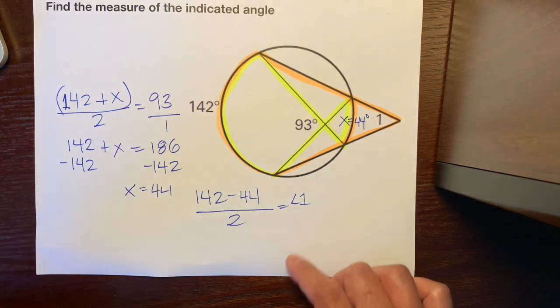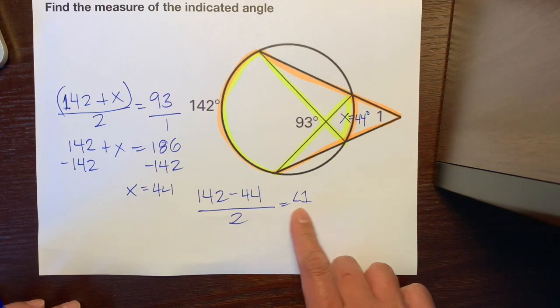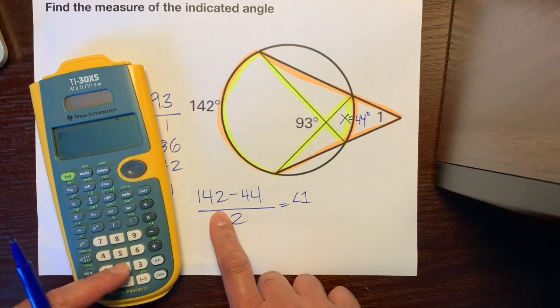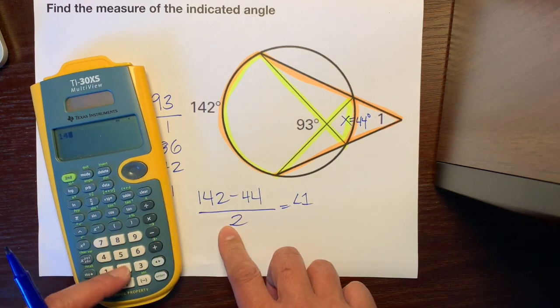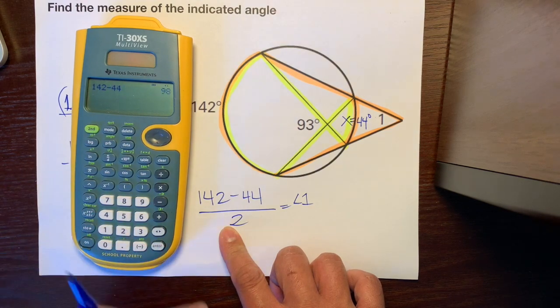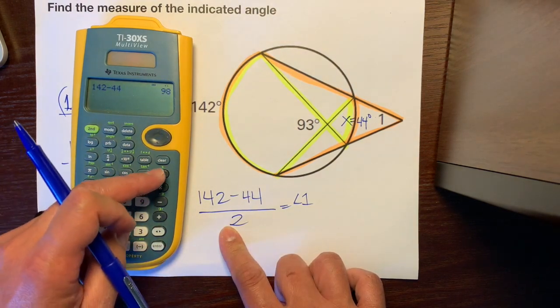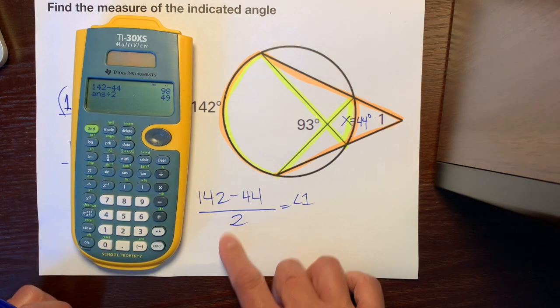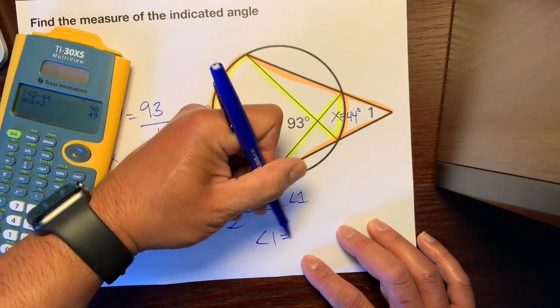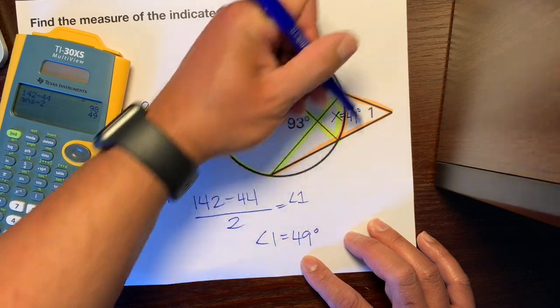Let's just put an angle 1 there so we know that it's not the number 1, but angle 1. Let's take our calculator and write 142 and subtract it from 44 and divide by 2, and our answer is 49. So angle 1 is 49 degrees.